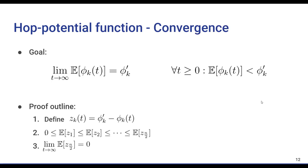To put what we want to prove formally, we prove two statements. First is that the expected value of phi_k at time t converges to phi prime k as t increases. And second is that it will always remain less than phi prime k as well.